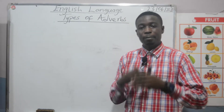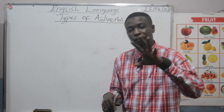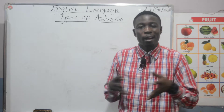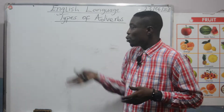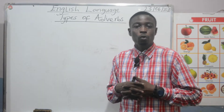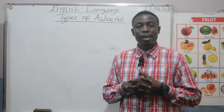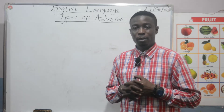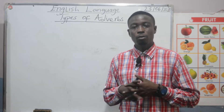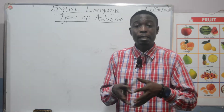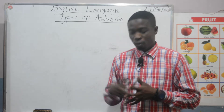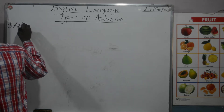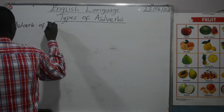These types of adverbs: some talk about how an action is done, some talk about where the action was done, some talk about when the action took place, and some talk about the extent to which the action took place. The first type is adverb of manner.